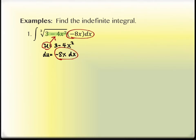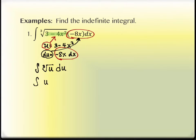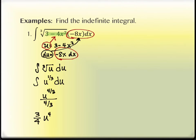We substitute: the cube root of (3 minus 4x²) becomes the cube root of u, and the remaining piece becomes du. Rewriting the cube root as u to the one-third, we find the antiderivative: u to the four-thirds divided by four-thirds, which equals three-fourths times u to the four-thirds, plus C. Then we replace u back with the original expression and rewrite in radical form: three-fourths times the cube root of (3 minus 4x²) to the fourth power, plus C.